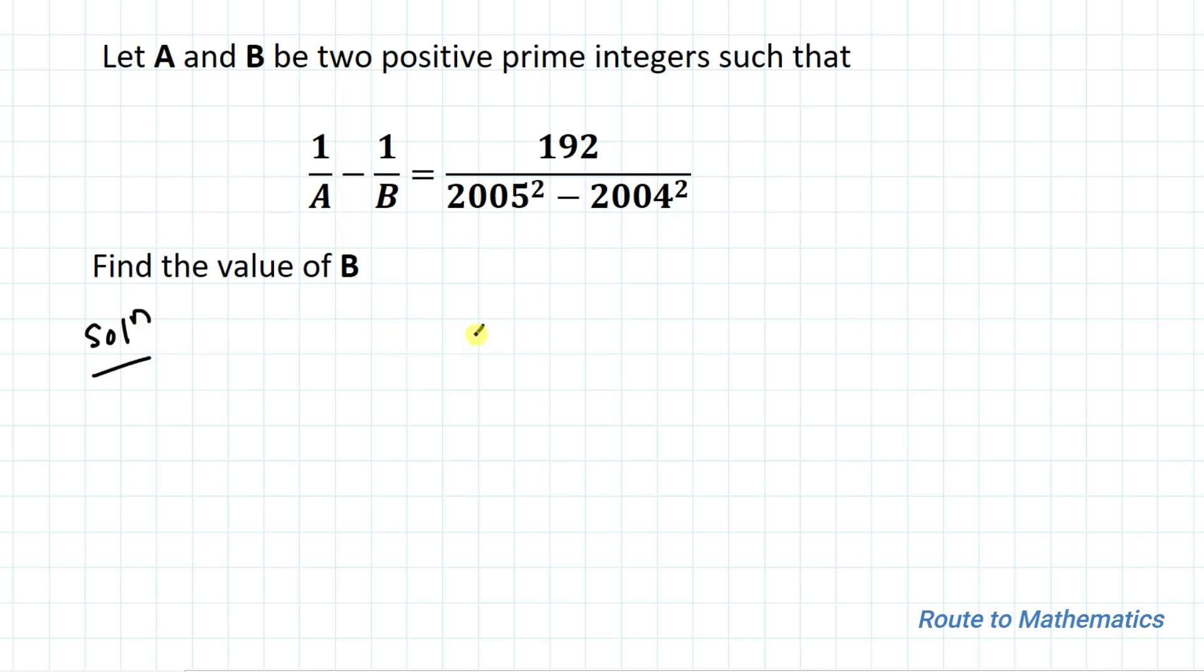We have 1/A - 1/B = 192/(2005² - 2004²). In the next step, let's take the LCM.